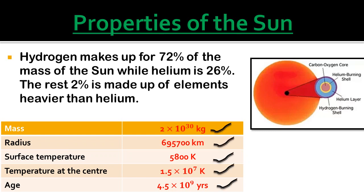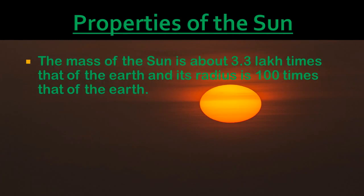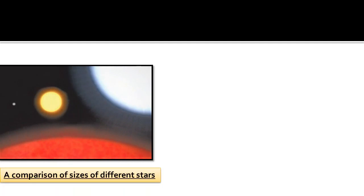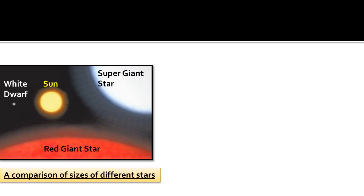The mass of the Sun is about 3,300 lakh times that of the Earth. Other stars have masses between one-tenth and 100 times that of the Sun, and their radii can range from one-tenth to 1,000 times the radius of the Sun. A size comparison shows different types of stars — the Sun, white dwarf, red giant, and supergiant — illustrating the wide range of stellar sizes.